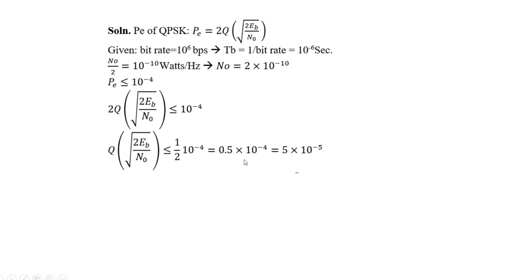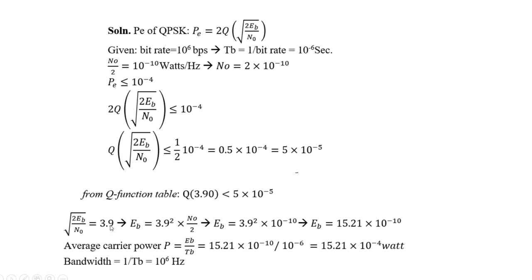From the Q-function table, Q(3.90) is less than 10^-5, so the argument of Q must be approximately 3.90. Substituting this value, we find Eb, and from Eb the carrier power is Eb divided by Tb, which equals 15.21 times 10^-4 watts. The bandwidth is 1/Tb; substitute the values of Eb and Tb directly to calculate it.